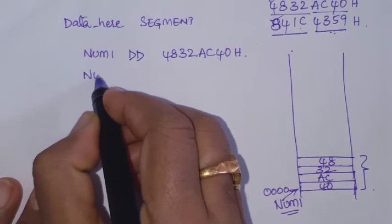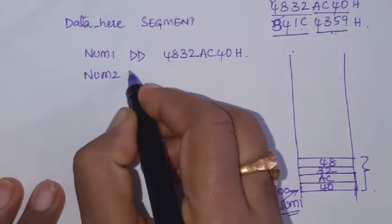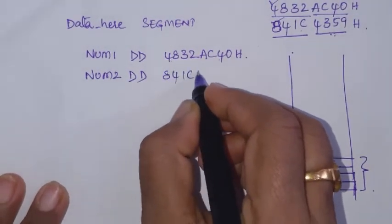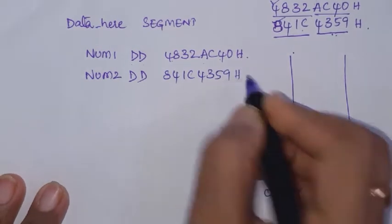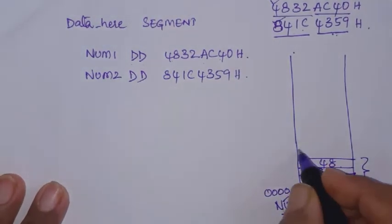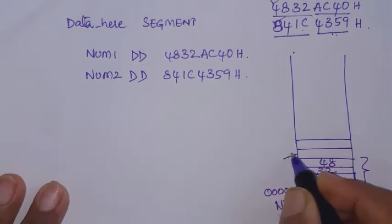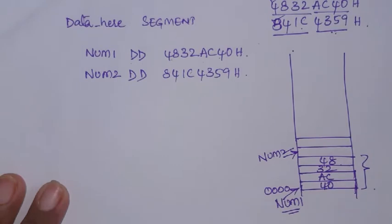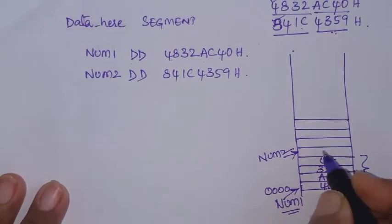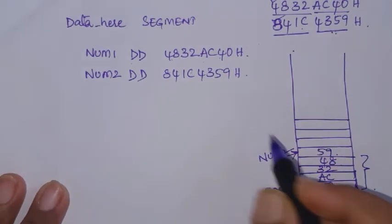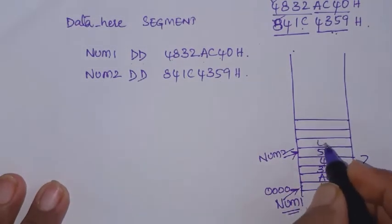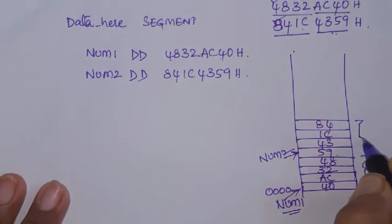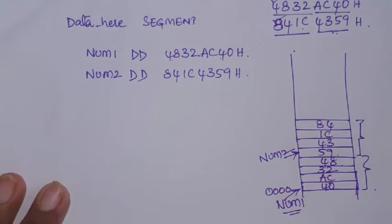Now initialize the next number. The next number is declared with DD, so it is 8459H. This is from the next location onwards. This location is given the name 'number 2', and this number is stored starting from the LSB as 5984. This is how the second number is stored in these locations.